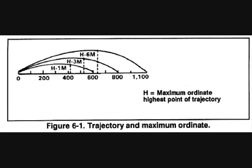B — maximum ordinate. This is the highest point the trajectory reaches between the muzzle of the weapon and the base of the target. It always occurs about two-thirds of the distance from the weapon to the target. Thus, when firing at a 600-meter target, your maximum ordinate occurs at 400 meters.